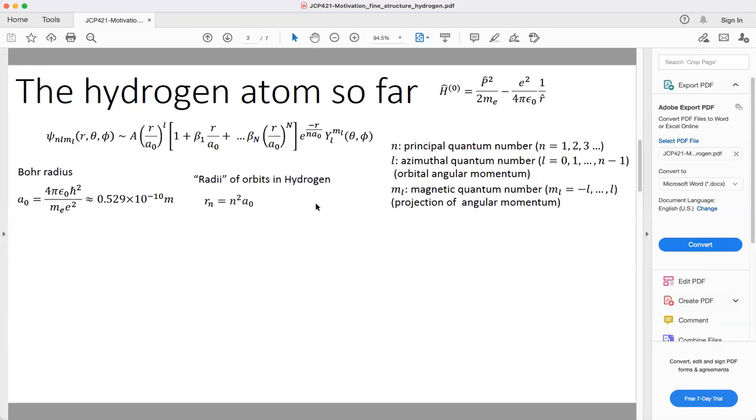For higher energy orbits, the radii—semi-classically speaking—scale with the Bohr radius as the square of the principal quantum number.